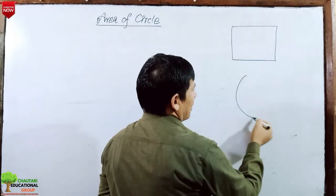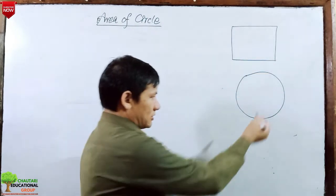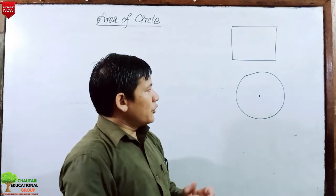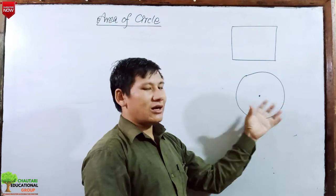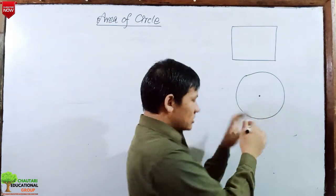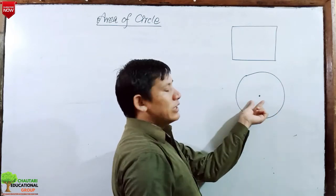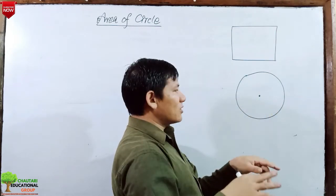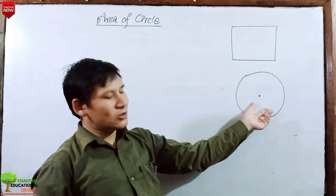Similarly, in a similar way, if we have a circle, the area of circle means the region we can cover. This is the area of circle.